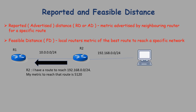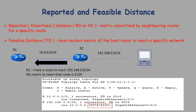For example, with two routers running EIGRP: R2 is directly connected to the 192.168.0.0/24 subnet and advertises it to R1 with a metric of 5120. R1 uses that to calculate its own metric to reach 192.168.0.0/24. In R1's topology table, the notation (5376/5120) shows: 5376 is the feasible distance — R1's metric to reach 192.168.0.0 — and 5120 is the advertised distance — R2's metric to reach that subnet.